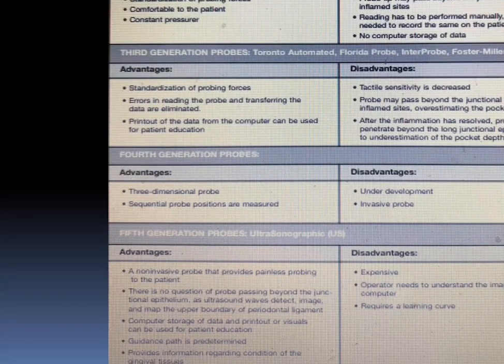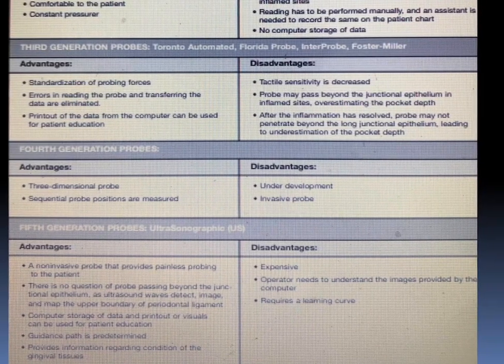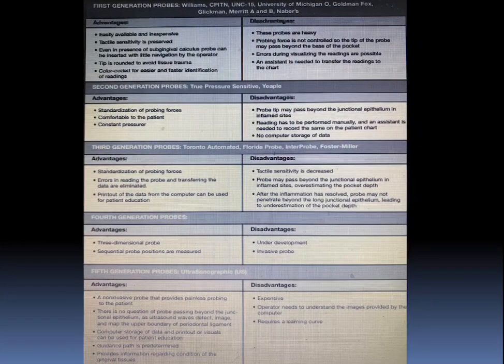Talking about the fourth generation probes: these are three-dimensional probes and sequential probe positions are measured; they are still under development and no more knowledge for this generation is available. Talking about the fifth generation probe — the ultrasonographic probe: it is a non-invasive probe that provides painless probing to the patient. It is very expensive, the operator needs to understand the image provided by the computer, it requires a great learning curve, and is technique sensitive. So these are all about the generations of probes.